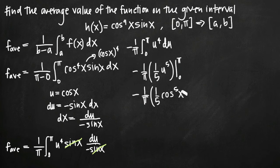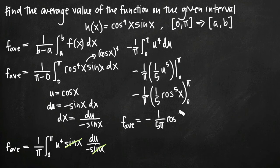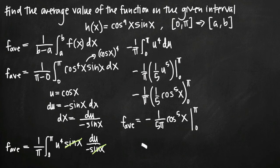Because u to the fifth power becomes cosine of x to the fifth, we evaluate from 0 to pi. Let's simplify: negative 1 over pi times 1 fifth can be combined into a single coefficient. The average value of the function equals negative 1 over 5 pi times cosine to the fifth of x, evaluated from 0 to pi. We plug in the top bound pi first, giving us negative 1 over 5 pi times cosine to the fifth of pi.